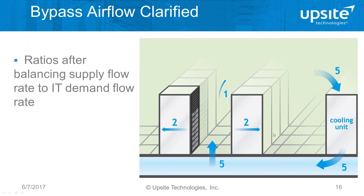By improving the airflow management — either with blanking panels or sealing cable openings — we can more closely balance the amount of air moving through the cooling units relative to the IT equipment. We keep a little bit extra to deal with variations in IT equipment demand, overcome airflow management deficiencies, reduce operating costs, and recover stranded capacity. We've now recovered five units of airflow that, as we add more cabinets, will be available and fans can be increased again.